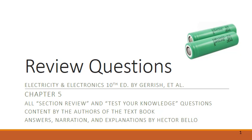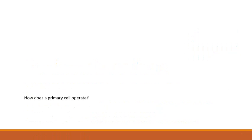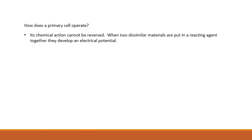Review questions, chapter five. How does the primary cell operate? Chemical action cannot be reversed. When two dissimilar materials are put in a reacting agent like acid, they develop an electrical potential.